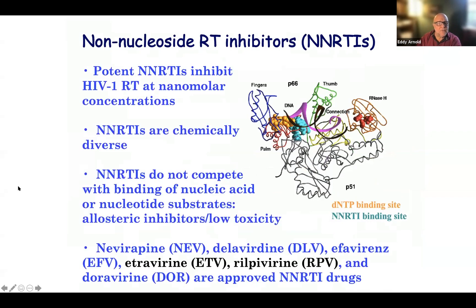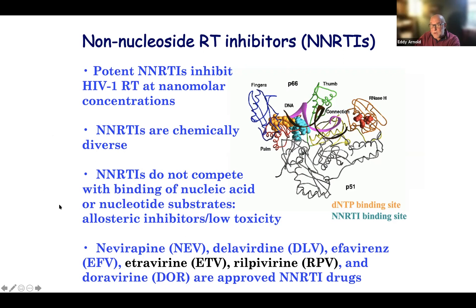I'd like to focus for some minutes on non-nucleoside RT inhibitors known as NNRTIs. These are nanomolar inhibitors. They're chemically diverse and allosteric inhibitors, meaning they can have very low toxicity and very high specificity. There are six approved for human use, including etravirine and rilpivirine.